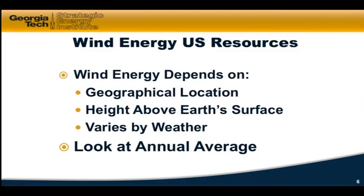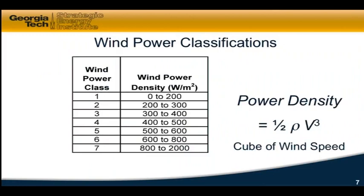Let's look at how we classify winds. You classify winds by wind power class one through seven, which indicates the range of wind power density — that's the watts per square meter of the area that you're capturing. Class one is zero to two hundred watts per square meter. So if your rotor blade's circle is capturing ten square meters, the total kinetic energy power in that ten square meters is up to two thousand watts for class one.